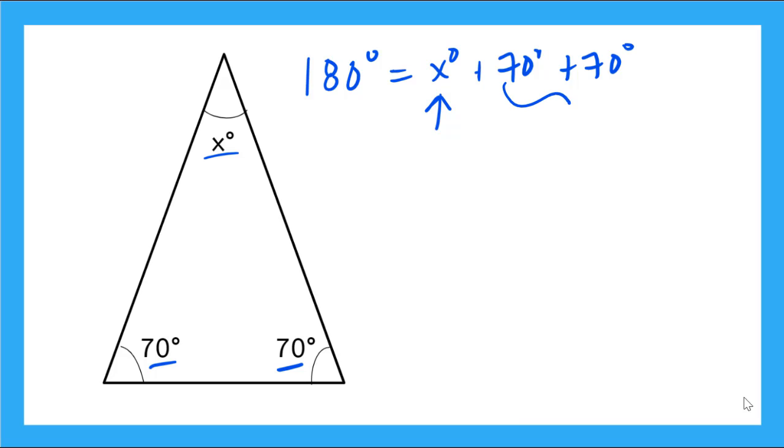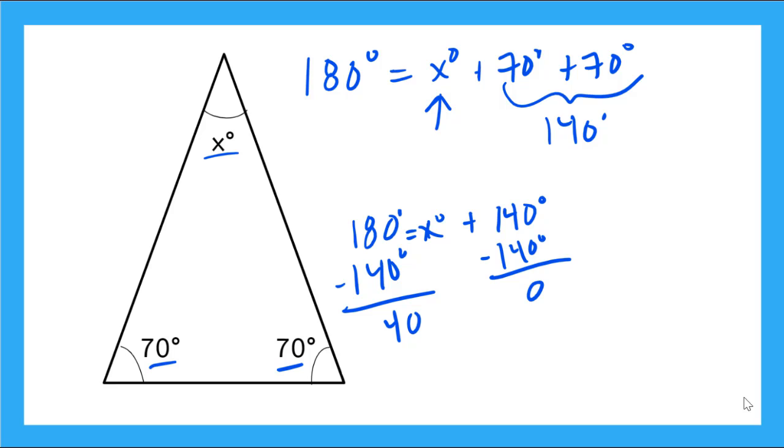So first I'm going to add my known angles, 70 plus 70, that's going to give me 140 degrees. So now I have 180 degrees is equal to my mystery degrees plus 140 degrees. So if I solve this for x, I'm going to subtract 140 degrees from this side, that gives me 0, and 140 degrees from this side, which gives me 40 degrees. So my mystery degree is 40 degrees.